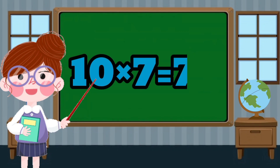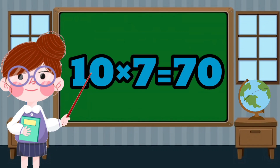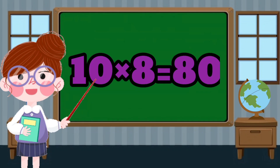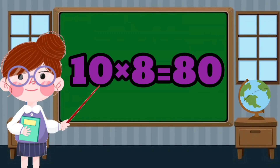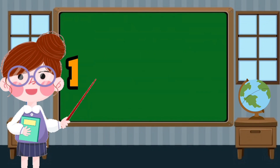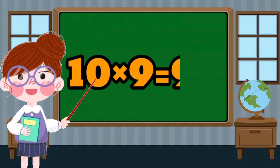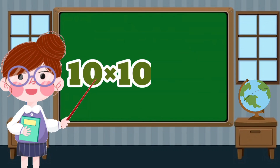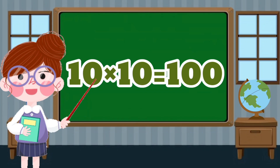10 x 7 equals 70. 10 x 8 equals 80. 10 x 9 equals 90. 10 x 10 equals 100.